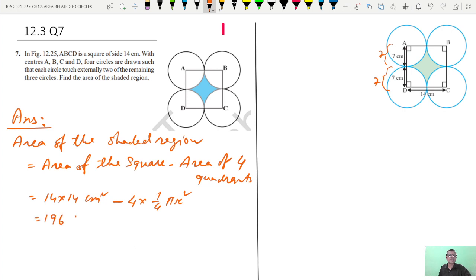So 196 centimeter square. 4, 4 gets cancelled. 22 by 7. What is the radius? Radius is 7 into 7.